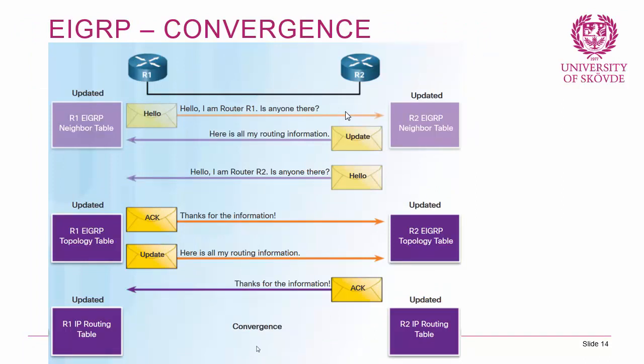During convergence, after router one receives the update from router two, it sends an acknowledgement and its own routing update in return. Router two then acknowledges. Convergence is reached when each router is aware of the networks connected to the other. With more routers, this update-acknowledgement process continues until all routers know all networks. Note the order of these packets — hello, update, acknowledgement, hello — as it's likely to appear on a test.